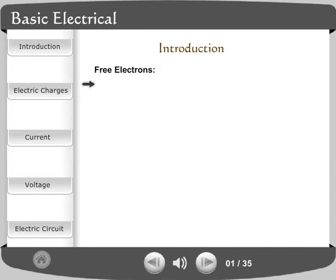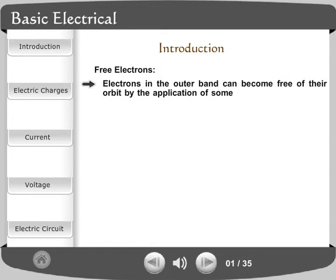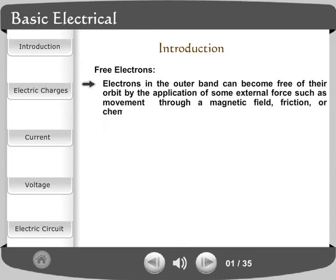Free electrons. Electrons in the outer band can become free of their orbit by the application of some external force such as movement through a magnetic field, friction, or chemical action. These are referred to as free electrons.